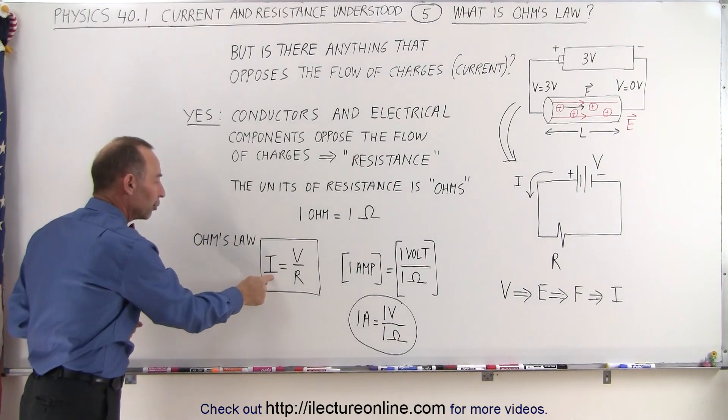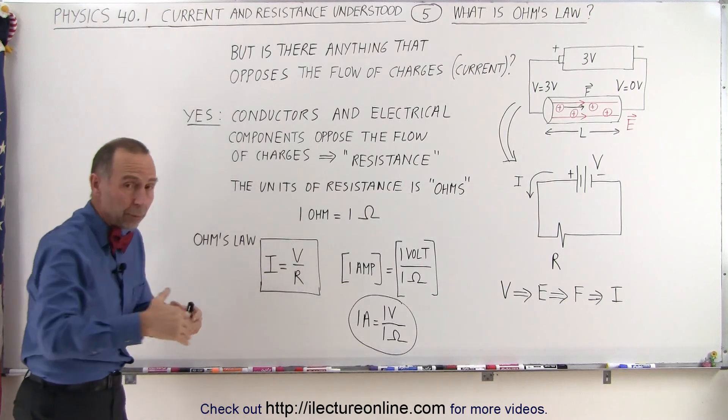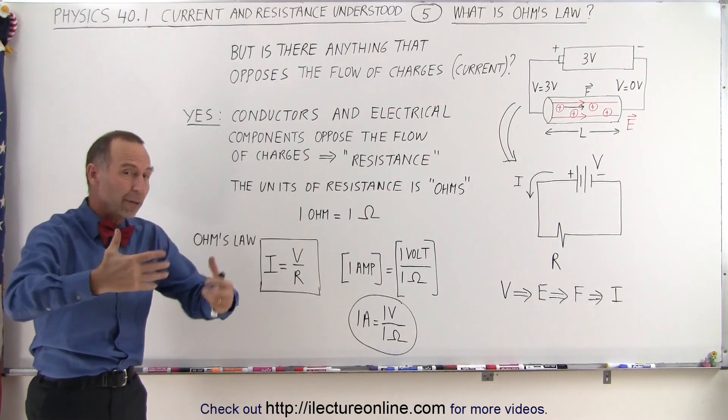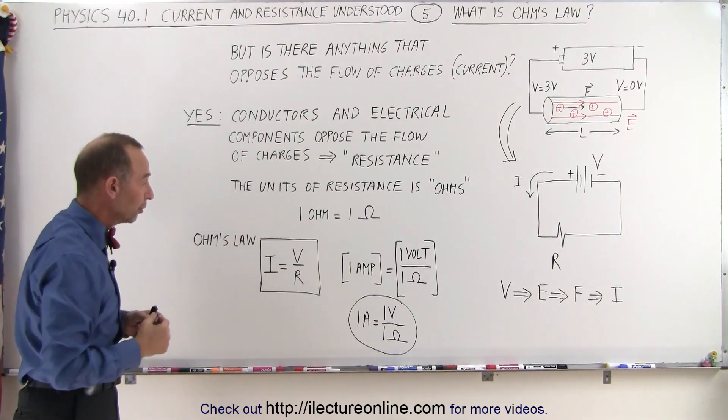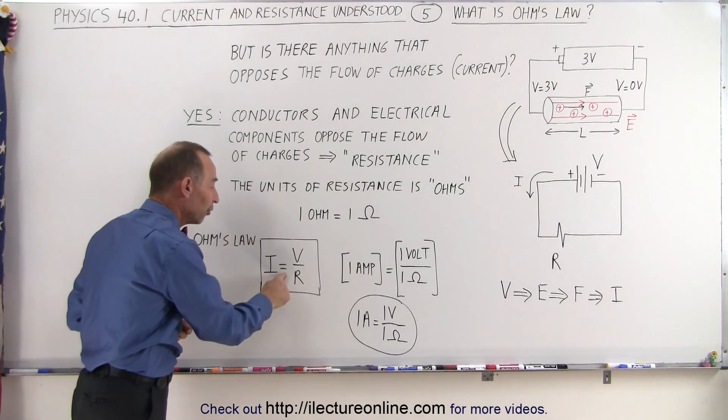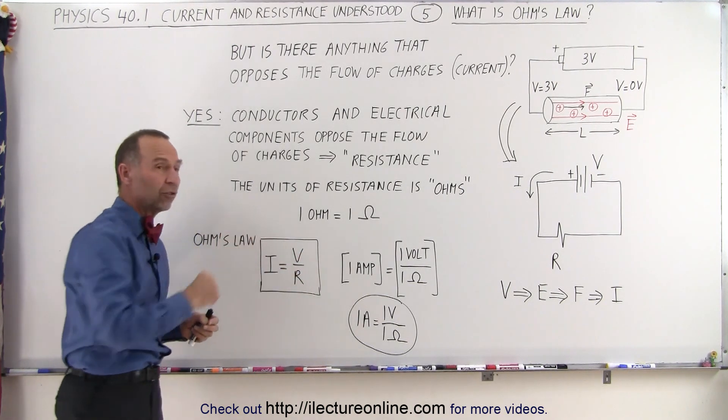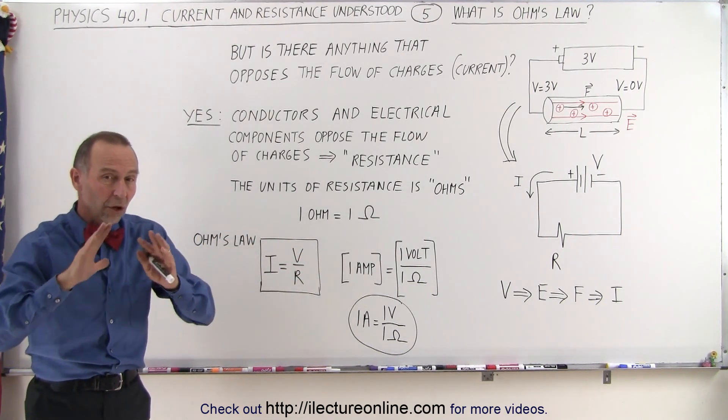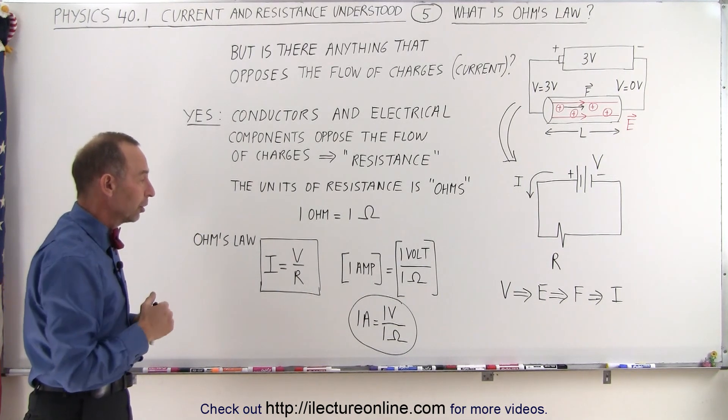The current flowing through the circuit depends upon how much voltage you apply. The more voltage you apply, the stronger the current, the greater the current. But it's also inversely proportional to the resistance in the circuit. The greater the resistance, the smaller the current flowing through the circuit.